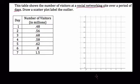So here, days will be our x axis. The day is 1, 2, 3, 4, 5, 6, 7, and y will be the visitors in the millions, and this is a social networking site.